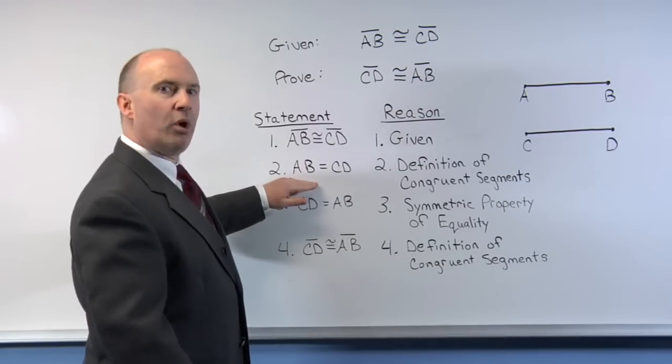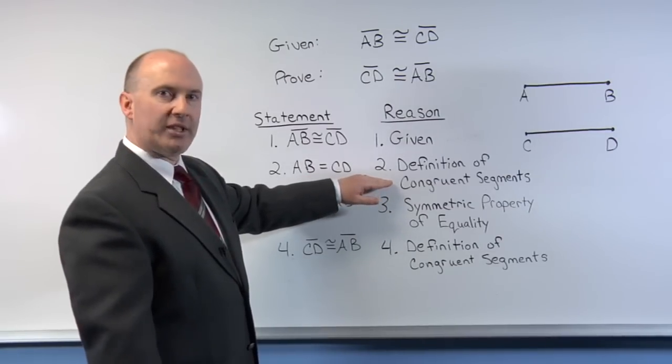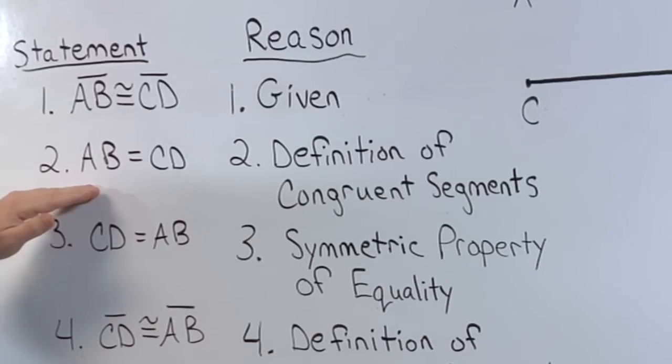The second step, we want to progress from that. Using the definition of congruent segments, we know that AB is equal to CD.